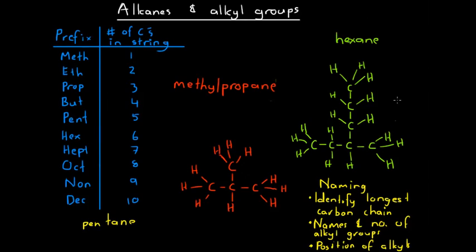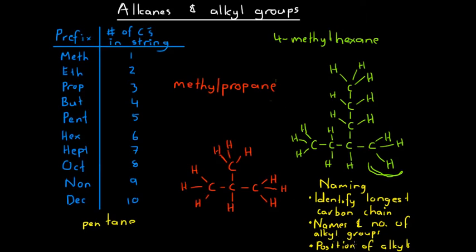We've got a side chain, which is a methyl group because there's only one carbon in it. We need to include the position: counting from one end this methyl group is on the third carbon, and from the other end it's on the fourth. A key rule is that we use the smallest number possible, so we start from the end that gives us the third carbon. This molecule is 3-methylhexane.